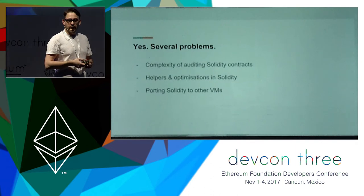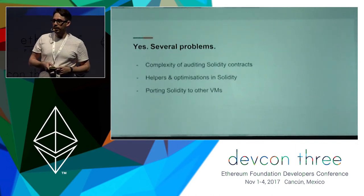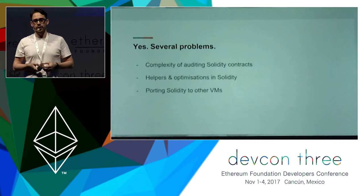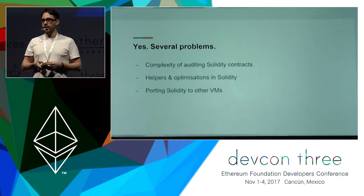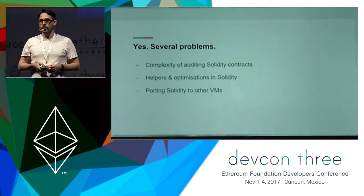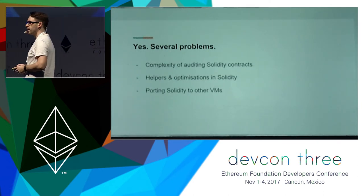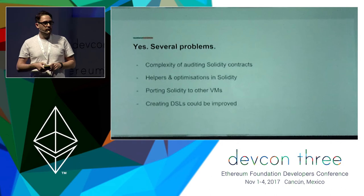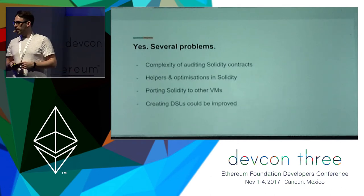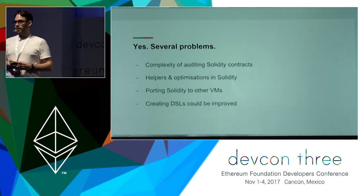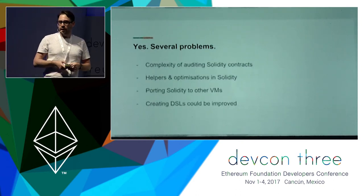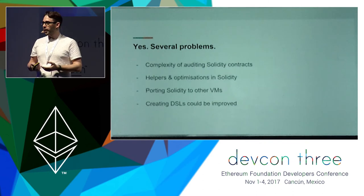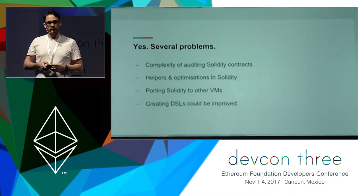So far the single-VM issue hasn't been a problem because Solidity can only output EVM bytecode. But in the future we might move to new virtual machines — one is called EVM 1.5 and another is ewasm. In the current state of Solidity, rewriting the compiler to support any of those would be a quite big change. And lastly, creating DSLs or domain-specific languages doesn't really exist at the moment. The most practical way to do that is to compile your DSL to Solidity or to Serpent, which exposes you to the very same problems Solidity has.